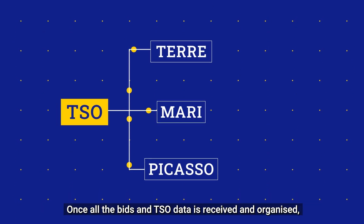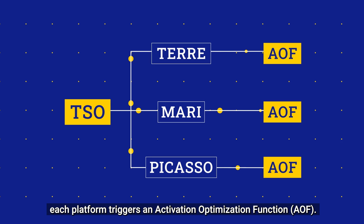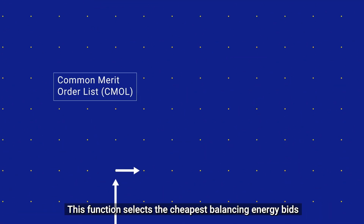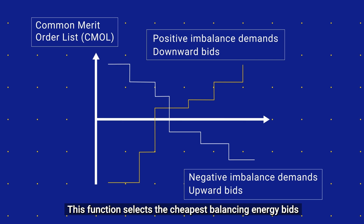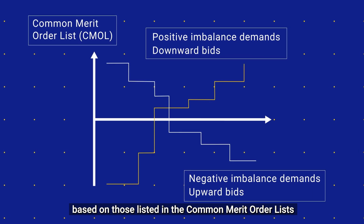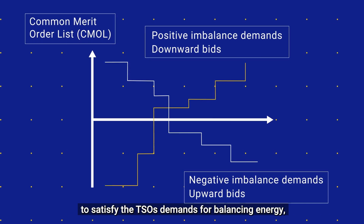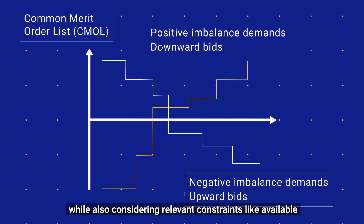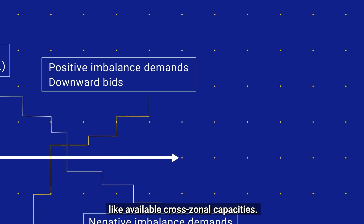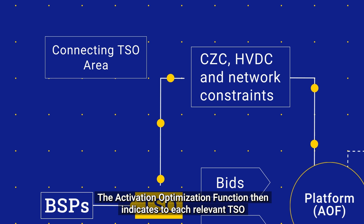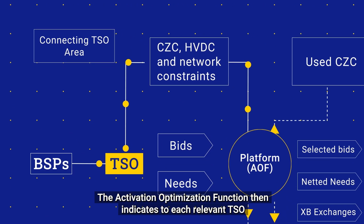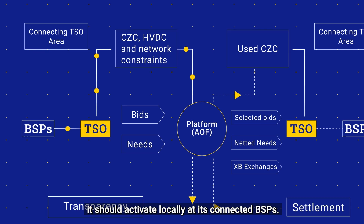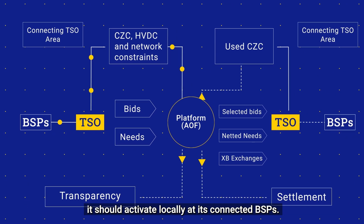Once all the bids and TSO data is received and organised, each platform triggers an Activation Optimisation Function (AOF). This function selects the cheapest balancing energy bids based on those listed in the common merit order lists to satisfy the TSOs' demands for balancing energy, while also considering relevant constraints like available cross-zonal capacities. The AOF then indicates to each relevant TSO how much energy, or which balancing energy bids, it should activate locally at its connecting BSPs.